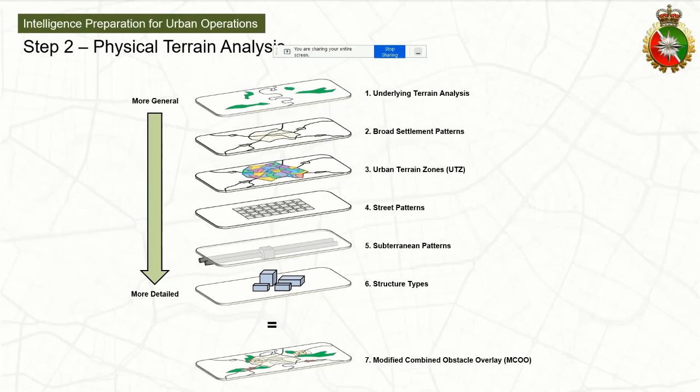A great example right now in the current conflict in Ukraine is the city of Kherson. Kherson backs onto the Dnieper River, which runs east to west on the southern side of the city, and it has a very important and major impact on how military forces are able to maneuver around that city. We have to make deductions about what those broad settlement patterns will do.